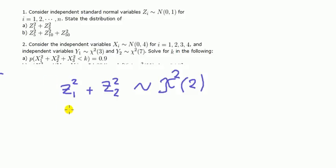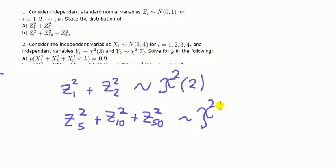Next one: I have z₅-squared plus z₁₀-squared plus z₅₀-squared. What's the distribution of that? It's going to be chi-square three.